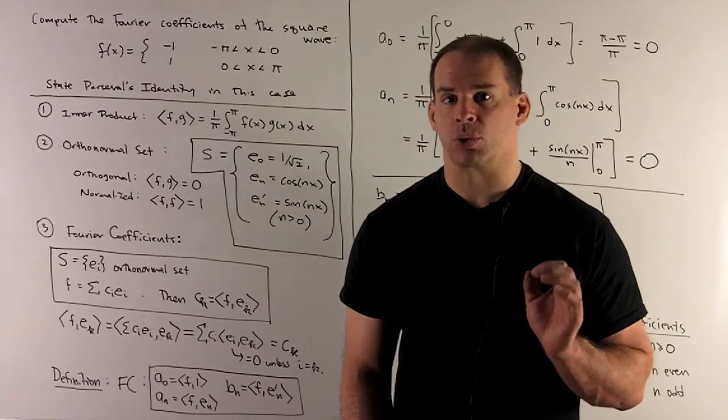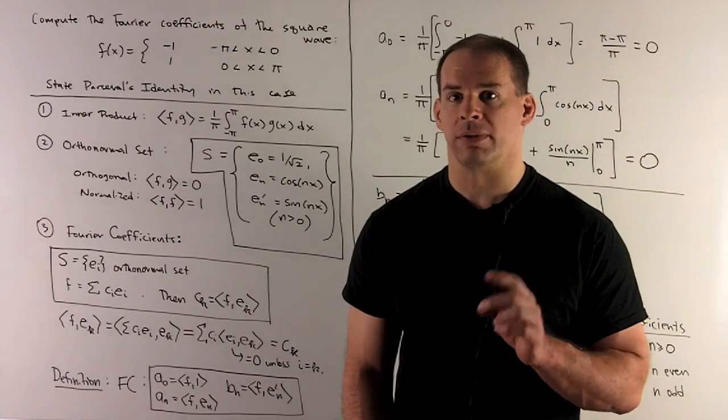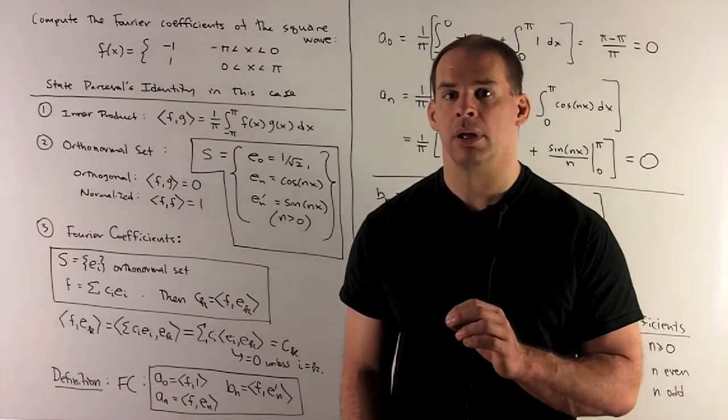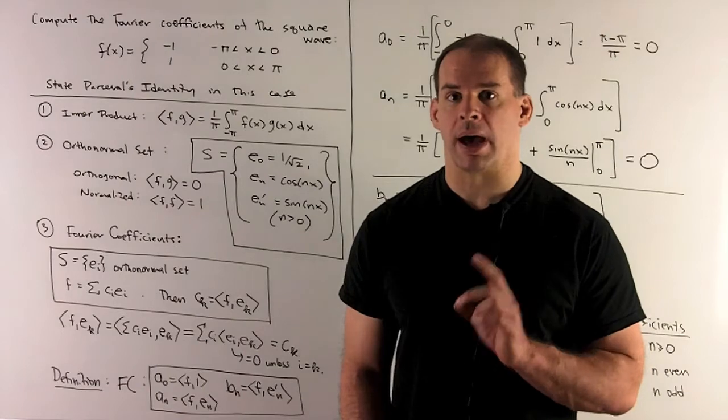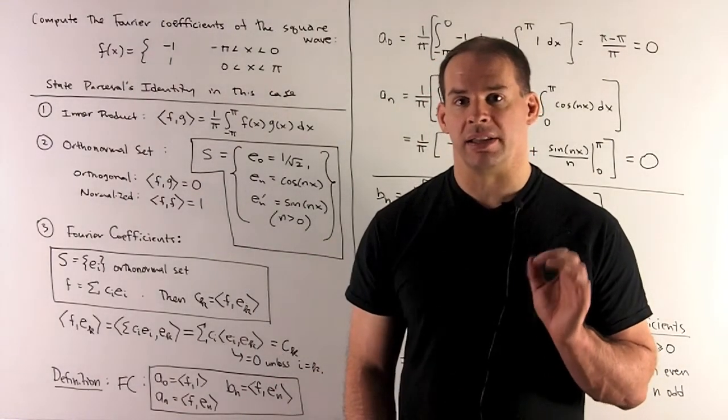Compute the Fourier coefficients for the square wave function, f of x equals minus one on the interval from minus pi to zero, one on the interval from zero to pi. Then state Parseval's identity in this case.